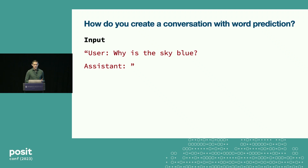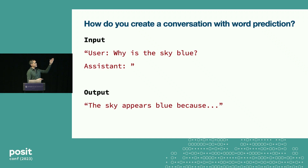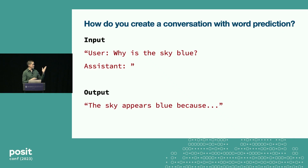You give that to the model and it will return an output — the sky is blue because... So really what I've done is prompted it to take part in a dialogue, and it knows how to fill in the rest. That's how it does this with word prediction.